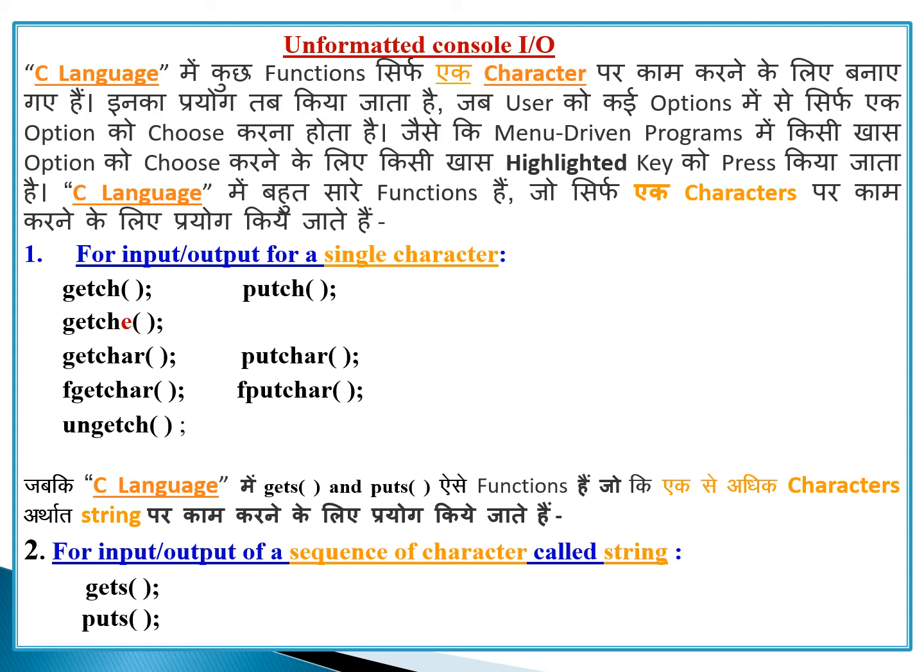The functions are getch, putch, and getche. Here 'e' stands for echo — meaning without displaying the output, when we give input, it will also appear on the screen. So getch, putch, and getche handle single character input and single character output in C language.